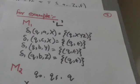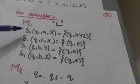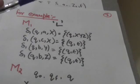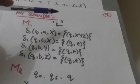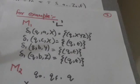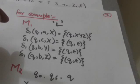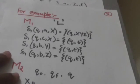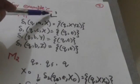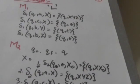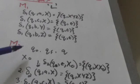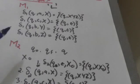Suppose there is a pushdown automata M1 which has these transitions. Q is its initial state, X is its stack start symbol. M1 accepts the language L by empty stack. Now we have to construct a pushdown automata M2 which accepts this language L by final state. Let X0 be the stack start symbol of M2.